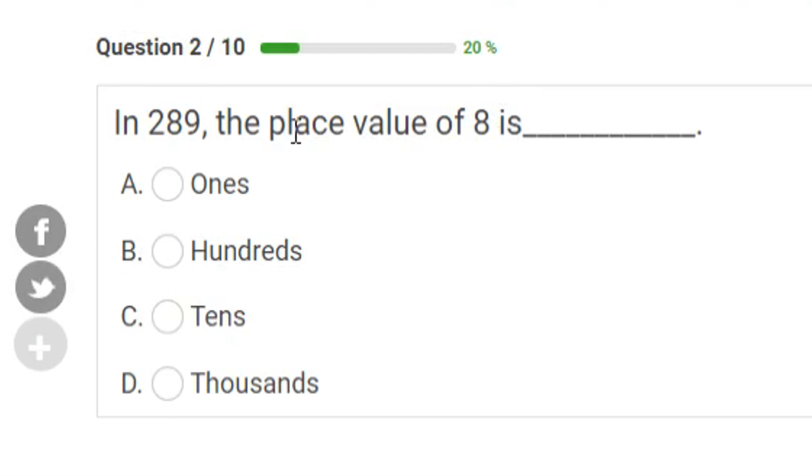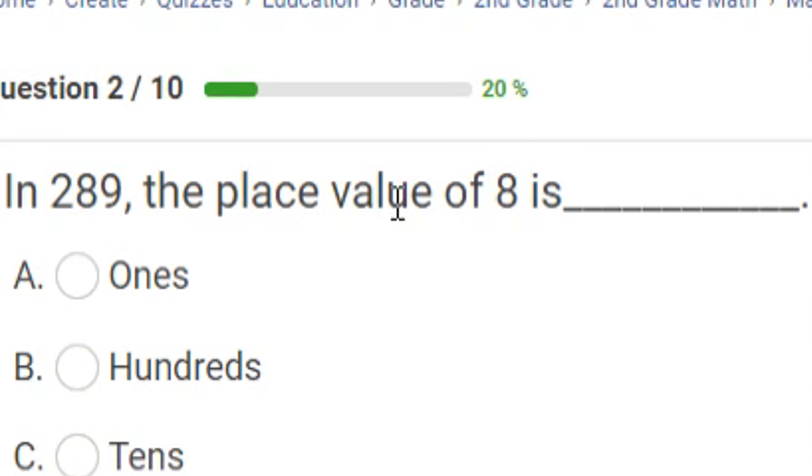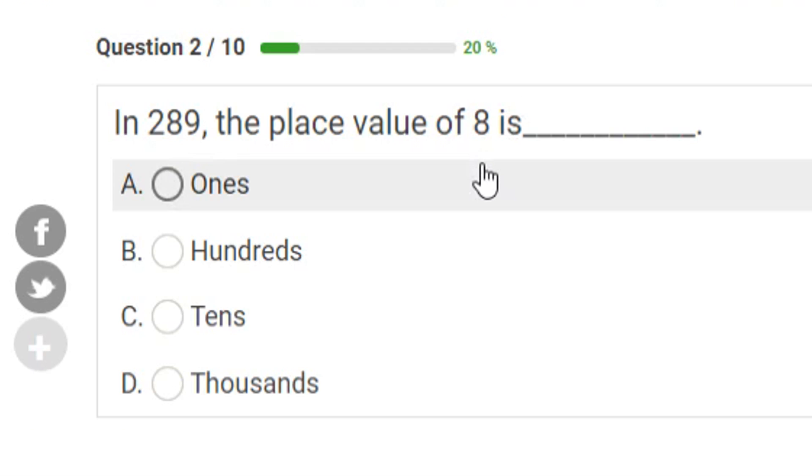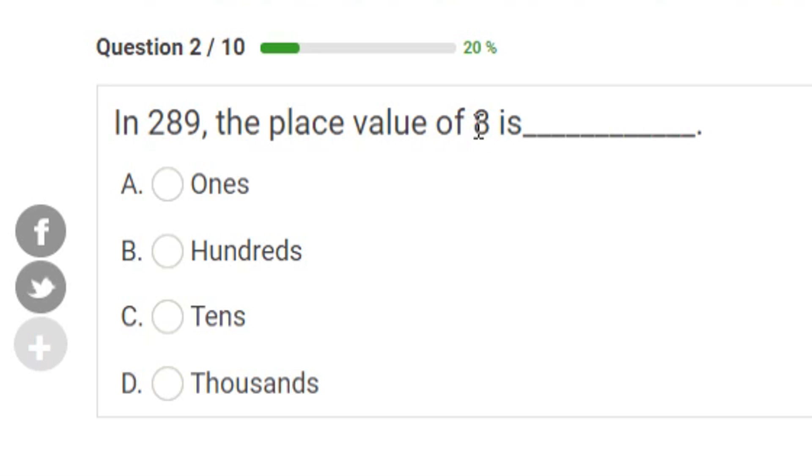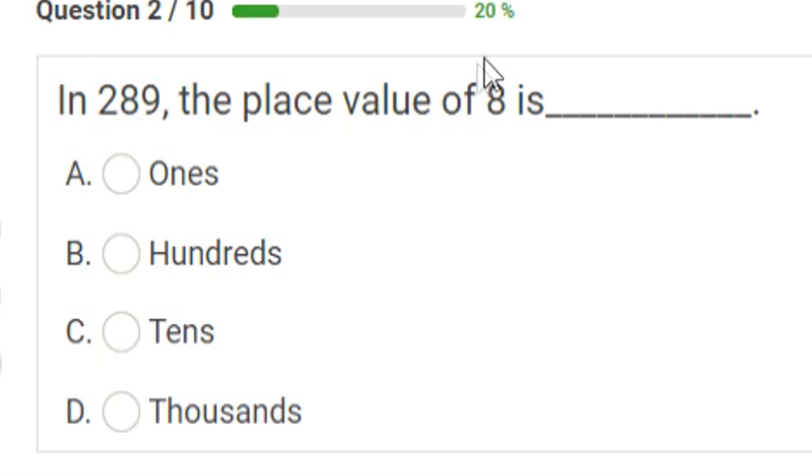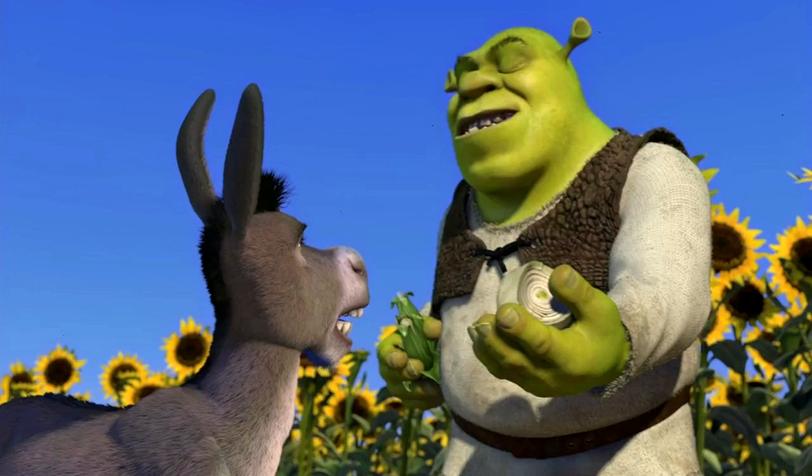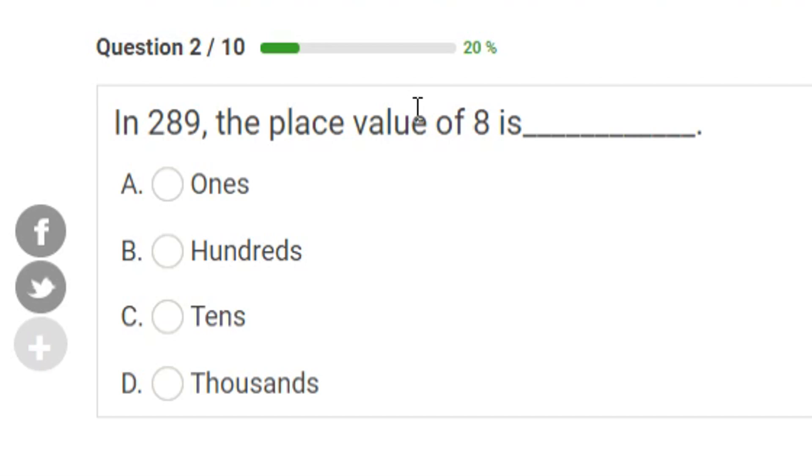Alright guys so the next question says, in this really big number, the place value of 8 is blank. Now guys I am pretty sure I know this one. The number 8 sounds like you ate something. Like for example, I ate over 43 burrito chip bags in 5 hours. The word hundreds remind me of onions. Shrek the ogre likes to eat onions. Shrek ate an onion. I am going to pick the letter B. Wish me luck.